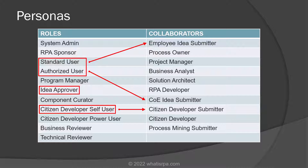The idea approver approves ideas that were submitted by the standard user. And the program manager, as mentioned, is that important and ubiquitous role that serves as a leader within the platform. Collaborators are added to ideas after they've been submitted, and these include things like the business analyst, the solution architect, the RPA developer, and the process owner. Those people are usually selected and assigned by the project manager.